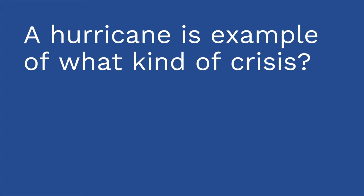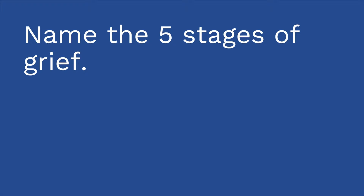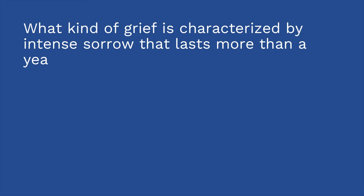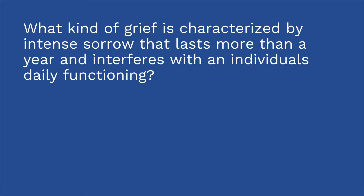It's time for a quiz — three questions. First: a hurricane is an example of what type of crisis? If you said adventitious crisis, you are right. Next: name the five stages of grief. They are denial, anger, bargaining, depression, and acceptance. Last question: what kind of grief is characterized by intense sorrow that lasts more than a year and interferes with an individual's daily functioning? That would be complicated grief.